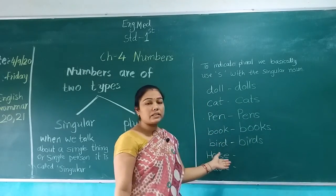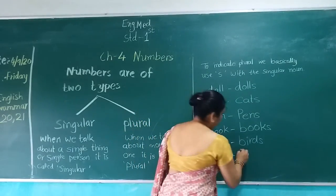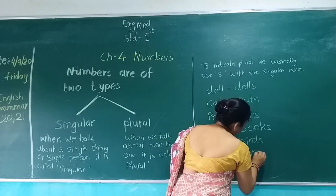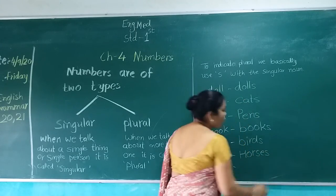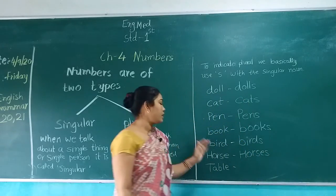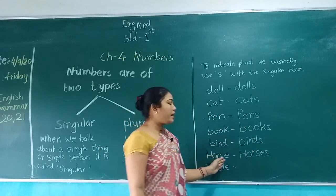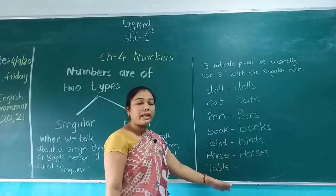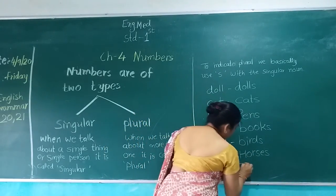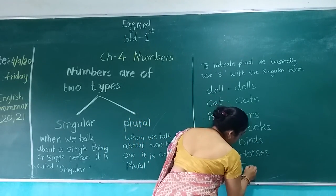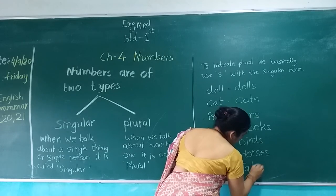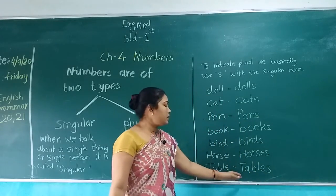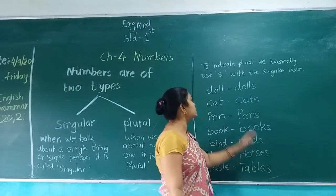H-O-R-S-E, Horse. H-O-R-S-E-S, Horses. T-A-B-L-E, Table. I have to make this plural. So I will add S. T-A-B-L-E-S, Tables.